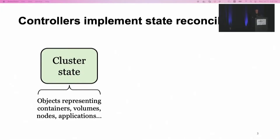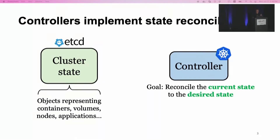Controllers implement state reconciliation. In Kubernetes, the entire cluster state is represented as a set of objects, and every object represents an entity in a cluster — like a container, a volume, a node, or an application. All those objects are hosted in a logically centralized and highly consistent data store called etcd. The end goal of each controller is to reconcile the current cluster state to match the desired state. To do so, every controller continuously monitors a subset of the cluster state and updates it by creating, modifying, or deleting objects.